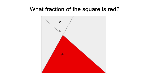What are similar triangles? Similar triangles are two triangles that share the same shape, but are of different sizes. Why are they similar? Because their corresponding angles are equal to each other.